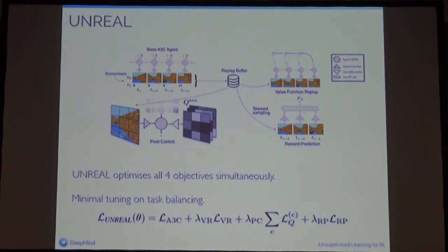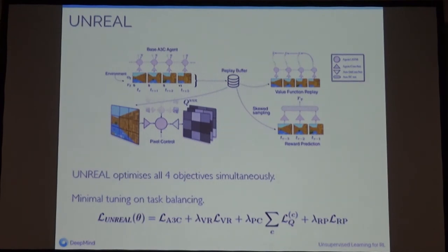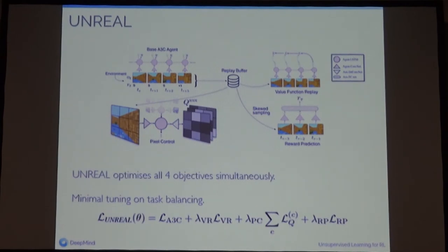Putting these three auxiliary tasks together with the base A3C policy gives you the UNREAL agent. We want to optimize all four objectives simultaneously, which starts to feel like multi-task learning. The overall UNREAL loss is composed of the A3C loss plus a weighted value function replay term, a weighted pixel control term, and a weighted reward prediction term. Quite surprisingly, this requires minimal tuning: we set value function replay and reward prediction weights to 1, and pixel control to 0.1 since it's optimizing hundreds of policies. The method is very robust to these weights — the tasks all seem complementary and none of them hurts the underlying policy.